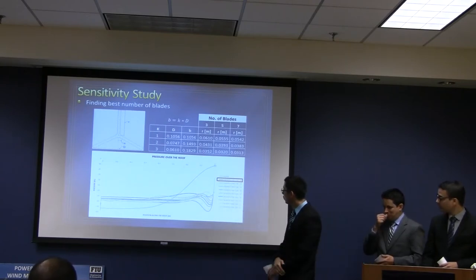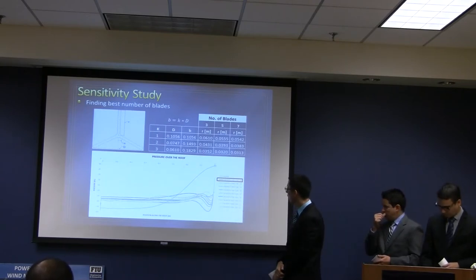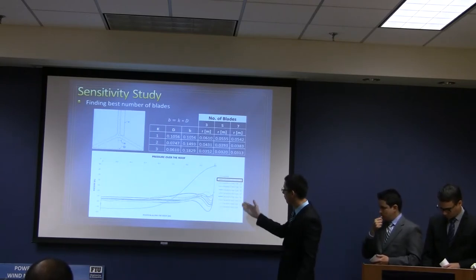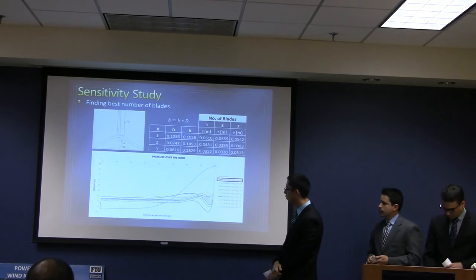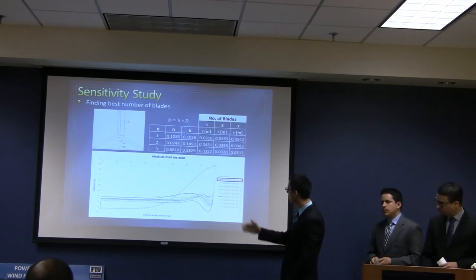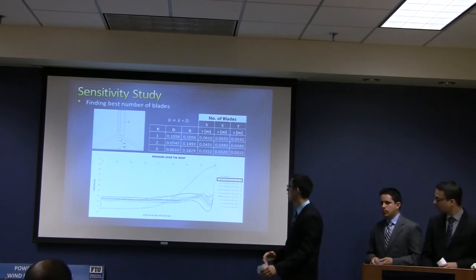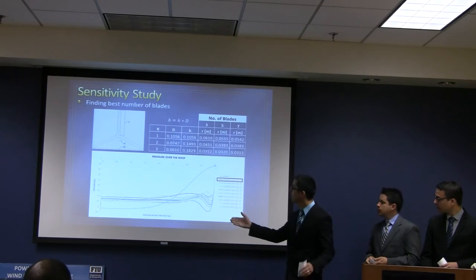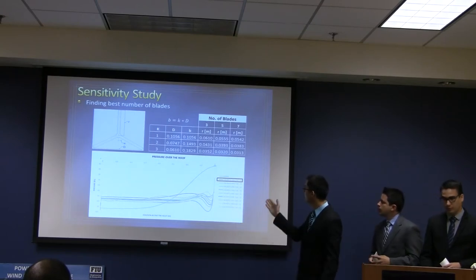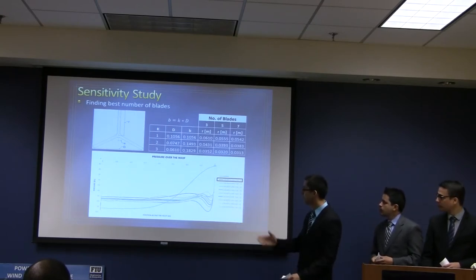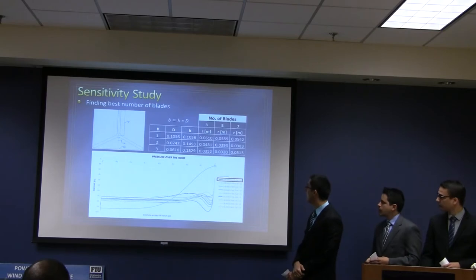This graph shows the pressure profile on the roof of the house. From this we concluded that the three straight-blade case — case one, where length equals tip-to-tip distance — would be selected and further analyzed for the study.